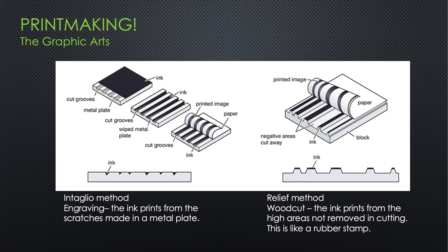Here's an explanation of the techniques. For the relief method — the wood block, the one you're most familiar with: everything except the black lines had to be cut out. When the design is finished, ink is placed on all the high parts and then applied to paper. This is just like rubber stamps — where there's a high design, you put ink on it and press it on paper, so everything high comes onto your paper.